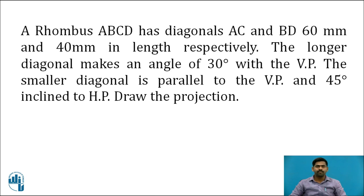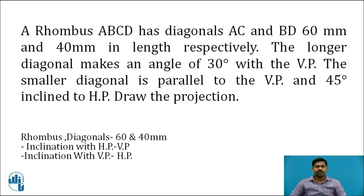Now read the problem carefully and note down the given data. First, the rhombus has diagonals of 60mm and 40mm respectively. Second condition: the longer diagonal makes an angle of 30 degrees with the VP, so it must appear in the top view. The smaller diagonal is parallel to the VP and 45 degrees inclined to the HP. Remember: inclination with the HP is drawn in the VP, and inclination with the VP is drawn in the HP.